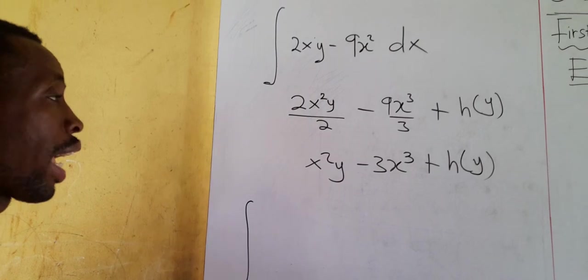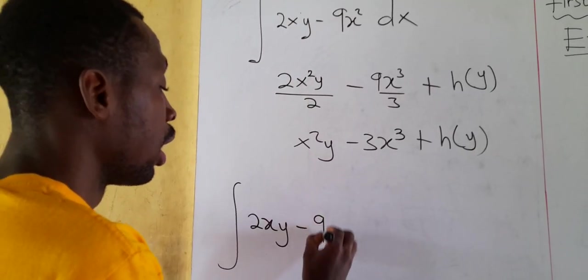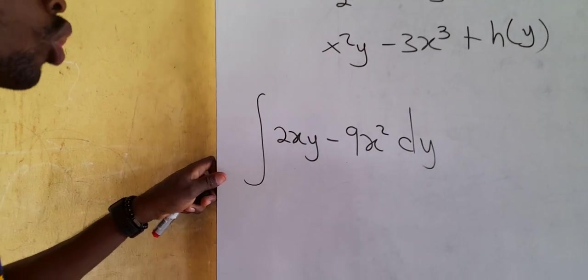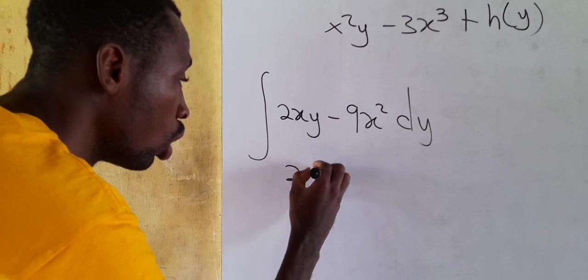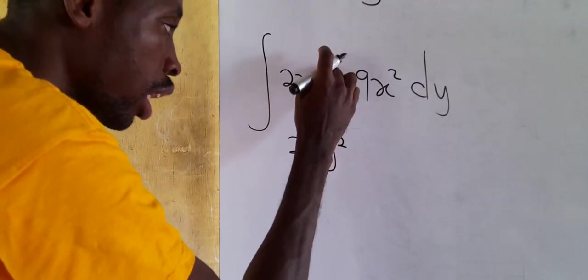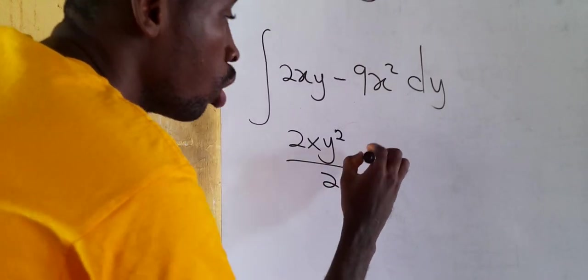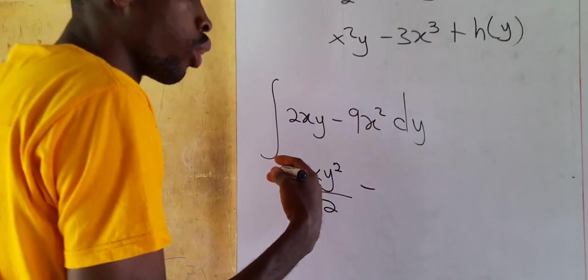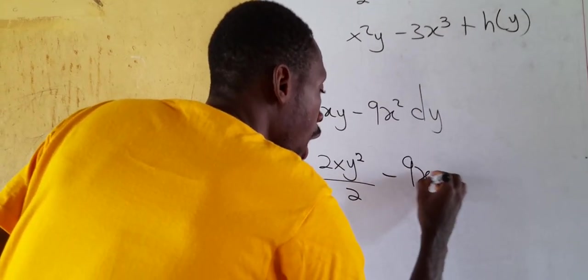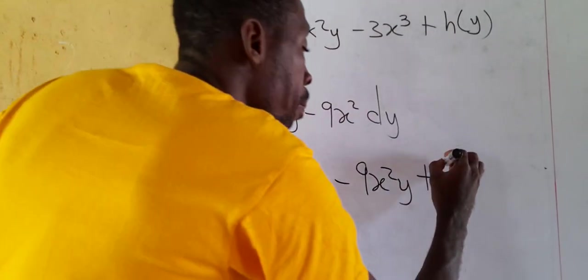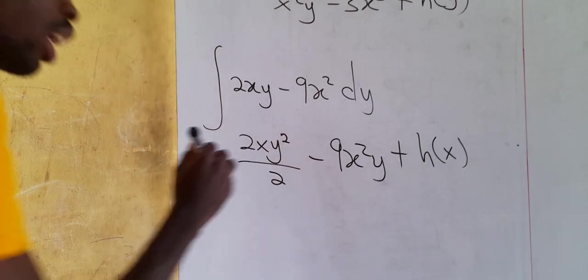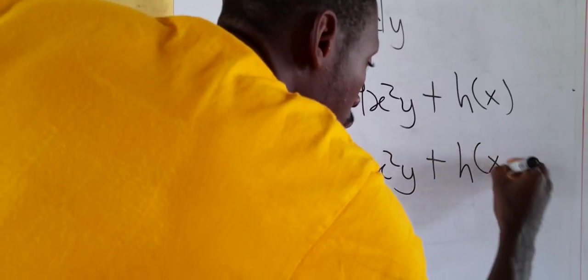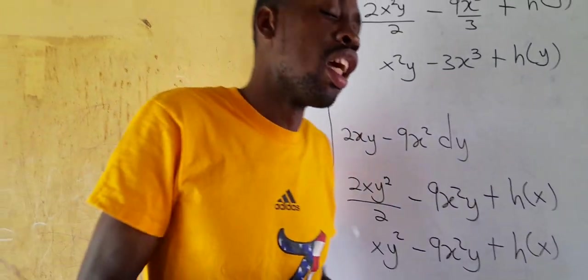Now let's integrate with respect to y. We have ∫(2xy − 9x²)dy, where x is kept constant. Using the integration rule, 2xy integrates to 2xy²/2, and since 9x² is constant with respect to y, it integrates to 9x²y. Adding the constant of integration as an arbitrary function of x, the result is xy² − 9x²y + h(x).